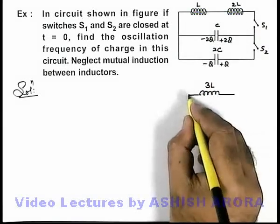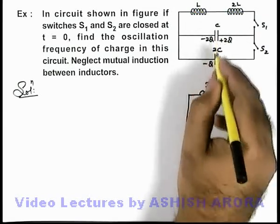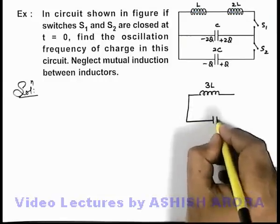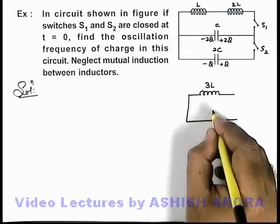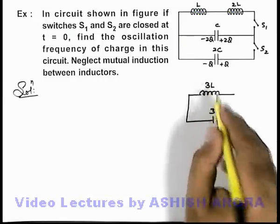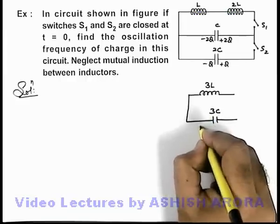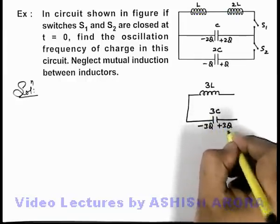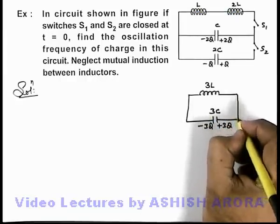When the switches are closed, we can see that C and 2C are in parallel, giving an equivalent capacitance of 3C. The charges on the capacitor plates will be -3Q and +3Q, and the switch is closed.